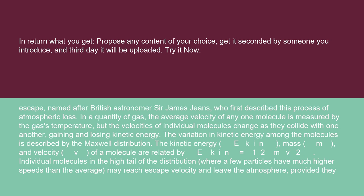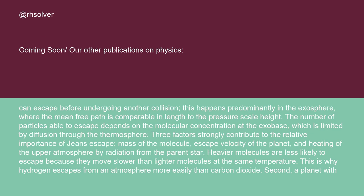Individual molecules in the high tail of the distribution, where a few particles have much higher speeds than the average, may reach escape velocity and leave the atmosphere, provided they can escape before undergoing another collision. This happens predominantly in the exosphere, where the mean free path is comparable in length to the pressure scale height. The number of particles able to escape depends on the molecular concentration at the exobase, which is limited by diffusion through the thermosphere.